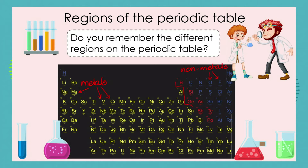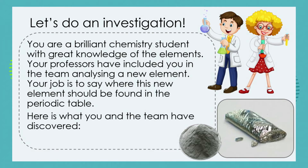Today we're looking at the staircase elements — the elements that can't decide: am I a metal or am I a non-metal? These are the semi-metals, and that is the focus of our lesson today.